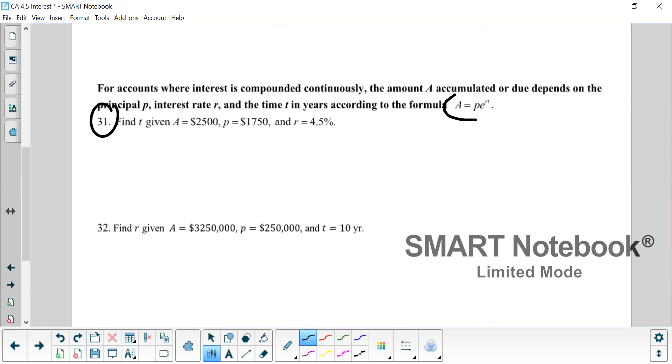All right. So here's the formula we're using. A equals PE to the RT. So A is 25,000. Equals P, 1750. E to the R. R is 4.5%. We need to move the decimal two places to the left. And T stays T because that's what we're looking for. And a few weeks ago, when we talked about solving exponential equations, we said you have to isolate the exponential term. That is this piece, E to the 0.045T. So we isolate it by dividing the 1750 first.